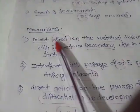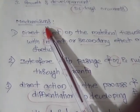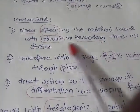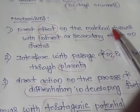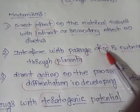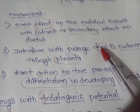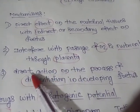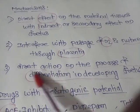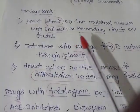The various mechanisms of teratogenicity include: a direct effect on maternal tissues with an indirect or secondary effect on the fetus; interference with the passage of oxygen and nutrients through the placenta; and a direct action on the process of differentiation in the developing fetus.